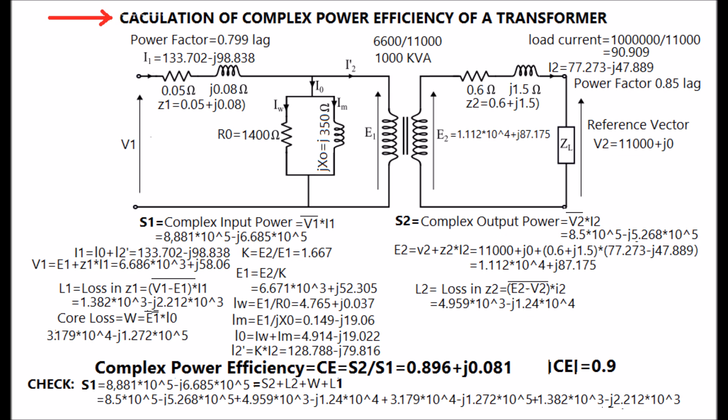Power transformer of 6600 volt by 11,000 volt, 1000 kVA is considered. The transformer primary winding impedance Z1 and the secondary winding impedance Z2 are given in the equivalent diagram.